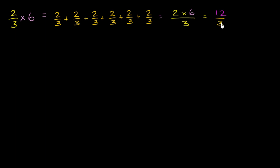And what is 12 thirds equal to? Well, we could rewrite 12 as 3 plus 3 plus 3 plus 3 over 3. And this is going to be the same thing as, let me do it like this so I don't have to keep switching colors.